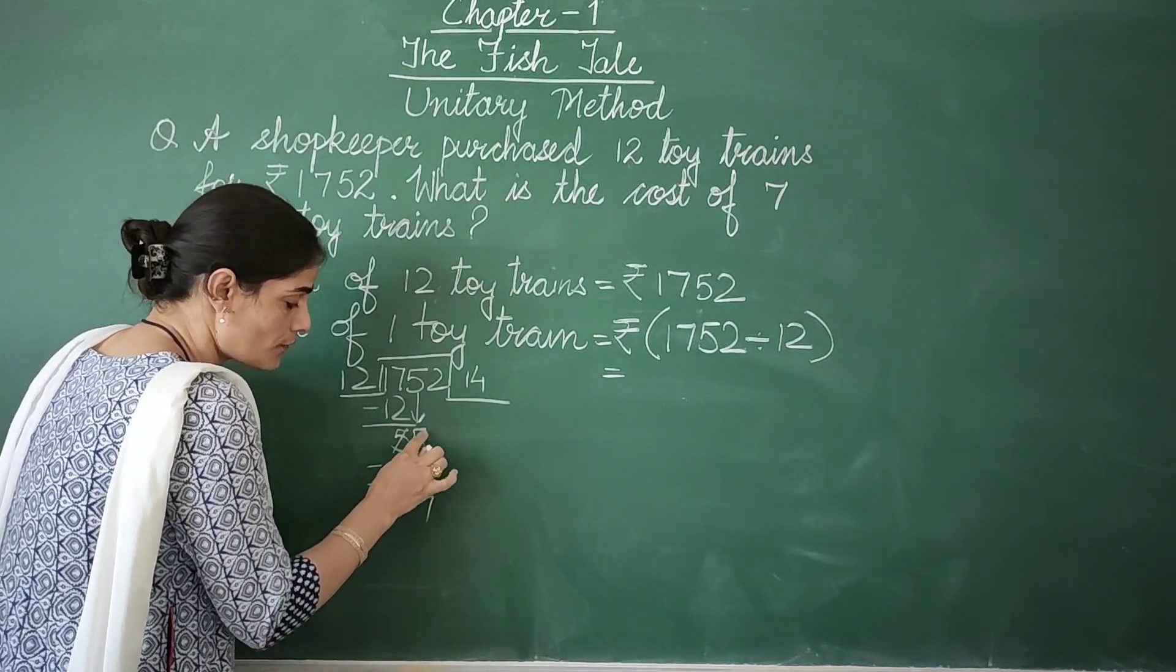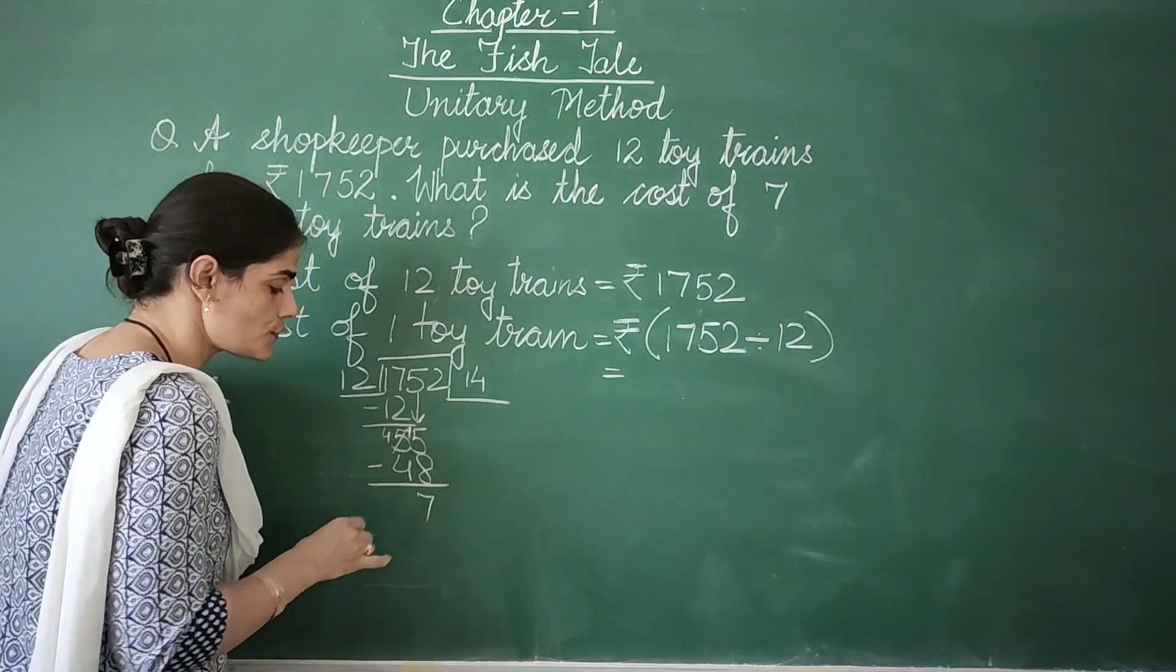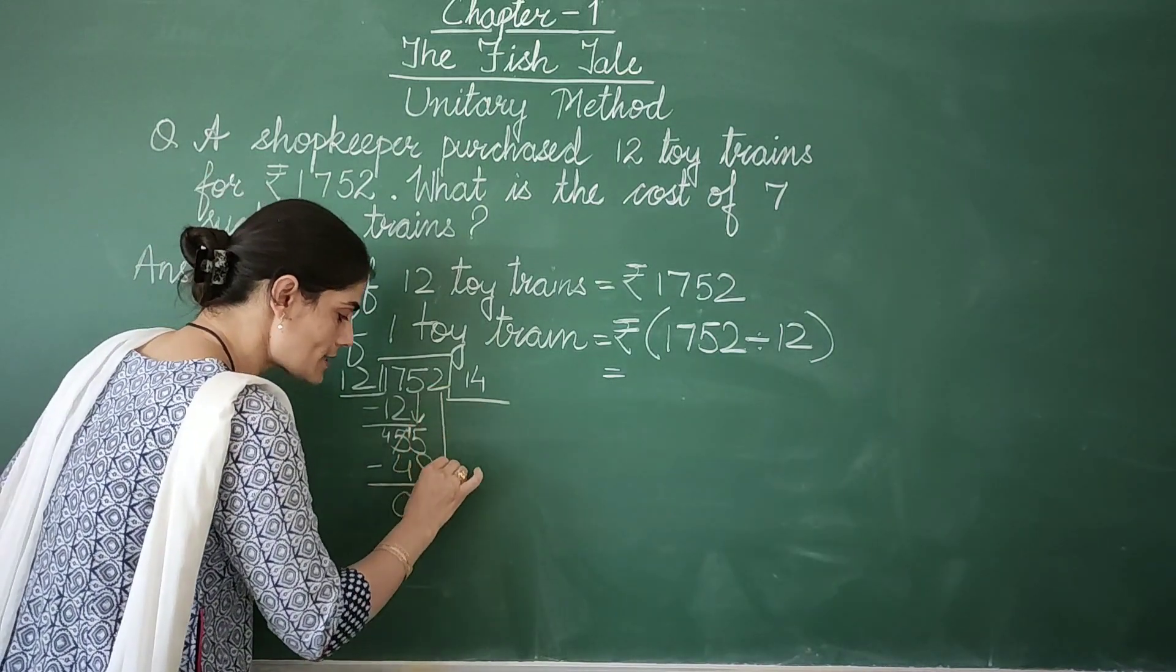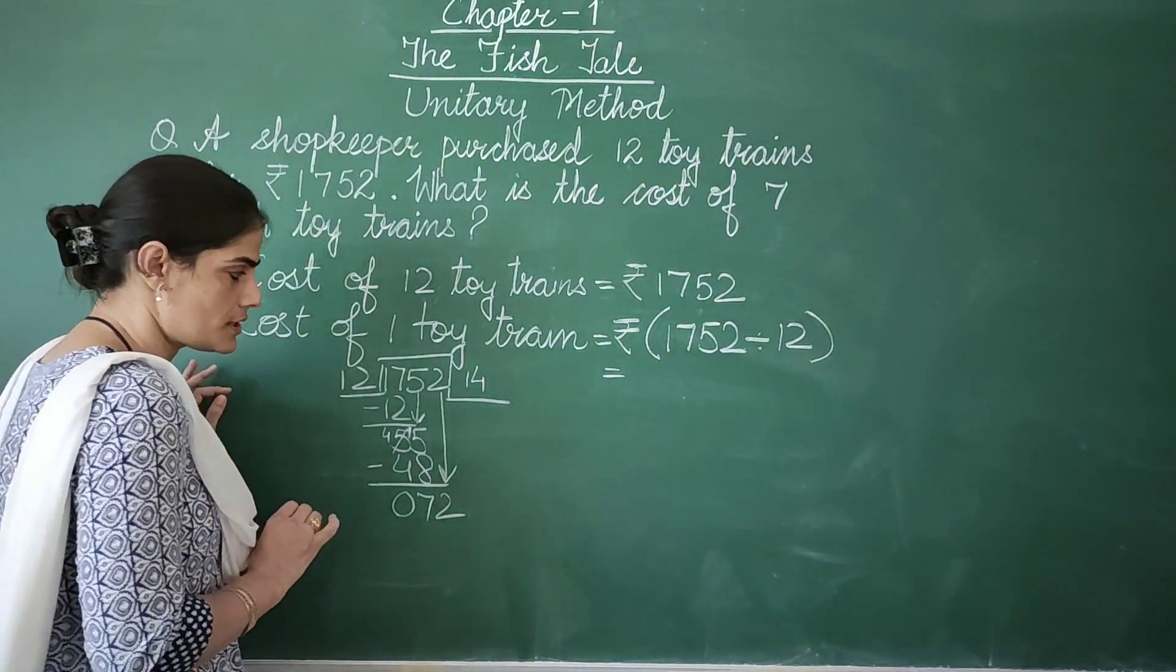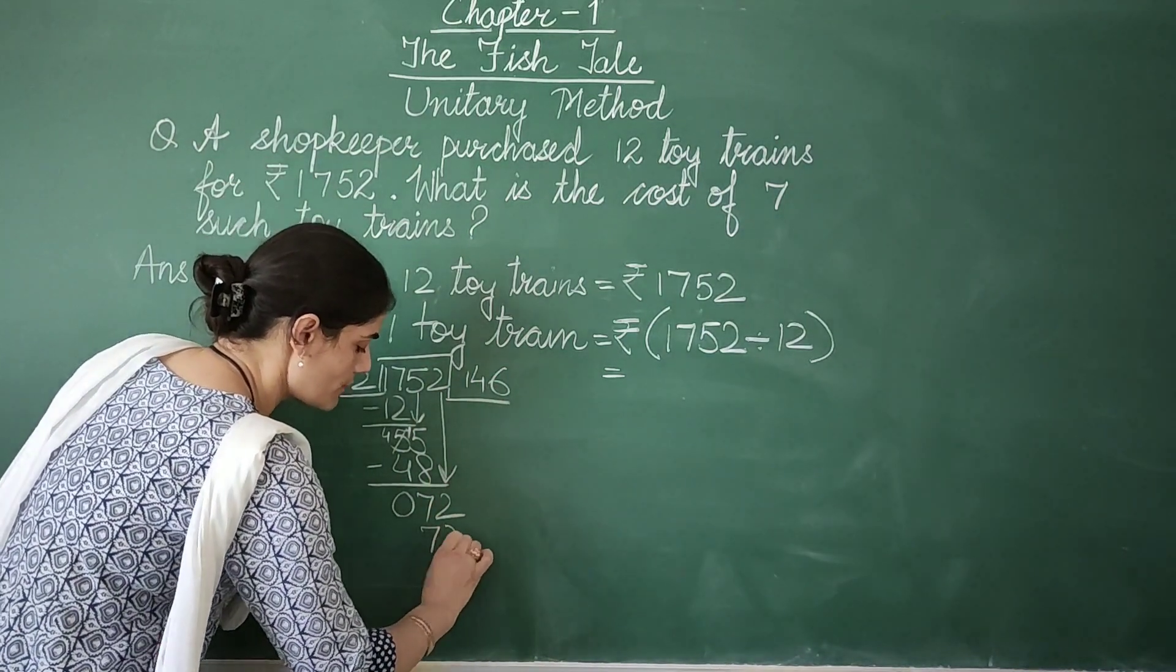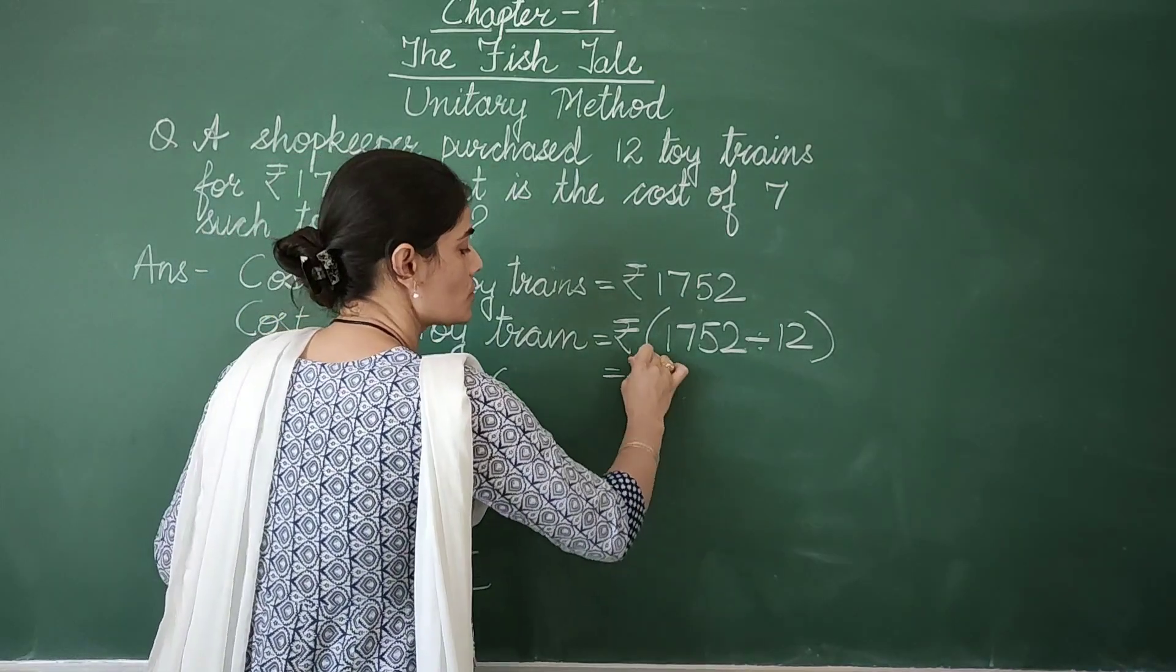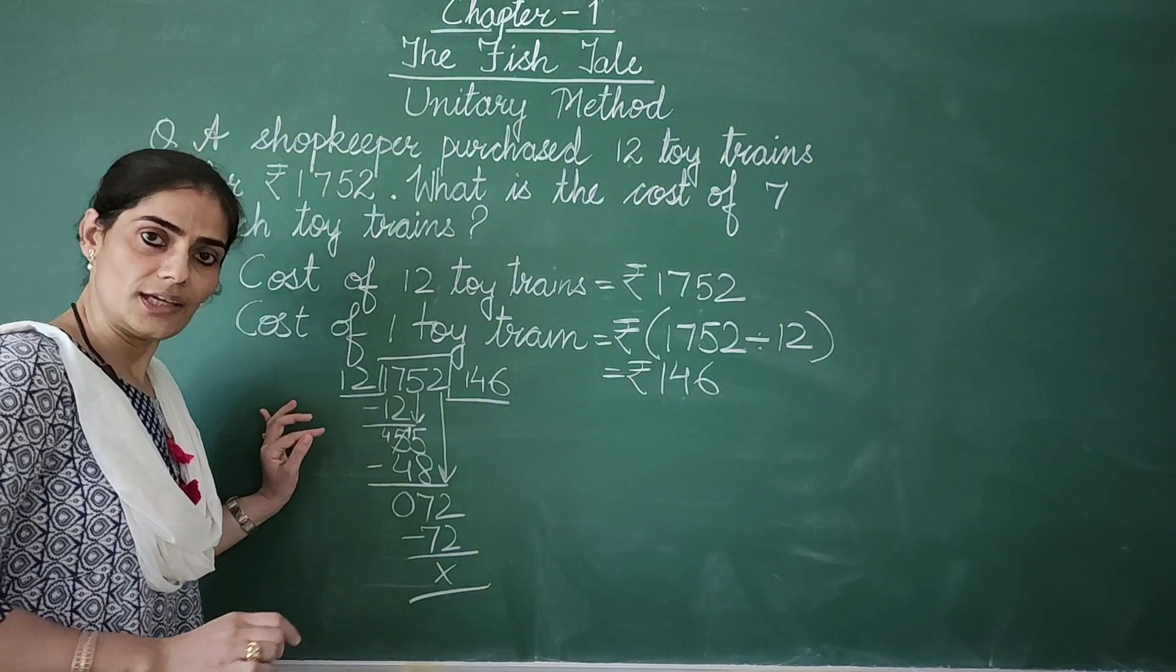We cannot subtract 8 from 5. So I borrowed 1 from here. So this became 4 and this is 15. 15 minus 8 is 7. And 4 minus 4 is 0. Now I bring down the last digit of this number, which is 2. Now I have 72. 12 sixes are 72. So the cost of 1 toy train is equal to rupees 146.